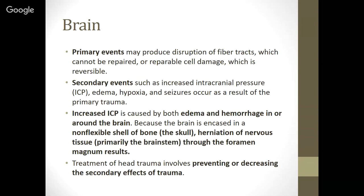Secondary events such as increased intracranial pressure, or ICP — pressure from abnormal flow of cerebrospinal fluid through those cavities — or edema, hypoxia, loss of oxygen, and seizures can all occur as a result of the primary trauma. Increased intracranial pressure is caused by both edema and hemorrhage in or around the brain. Because the brain is encased in a non-flexible shell of bone, the skull, herniation of nervous tissue through the foramen where the brainstem sits is immediately fatal. Treatment of head trauma involves preventing or decreasing those secondary effects.